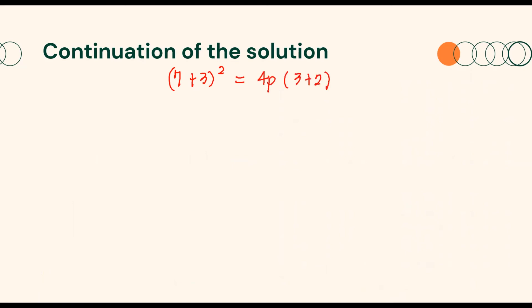From here, we can now solve for the value of p. Simplifying: 10 squared equals 4p times 5, giving us 100 equals 20p. Therefore, p equals 5.